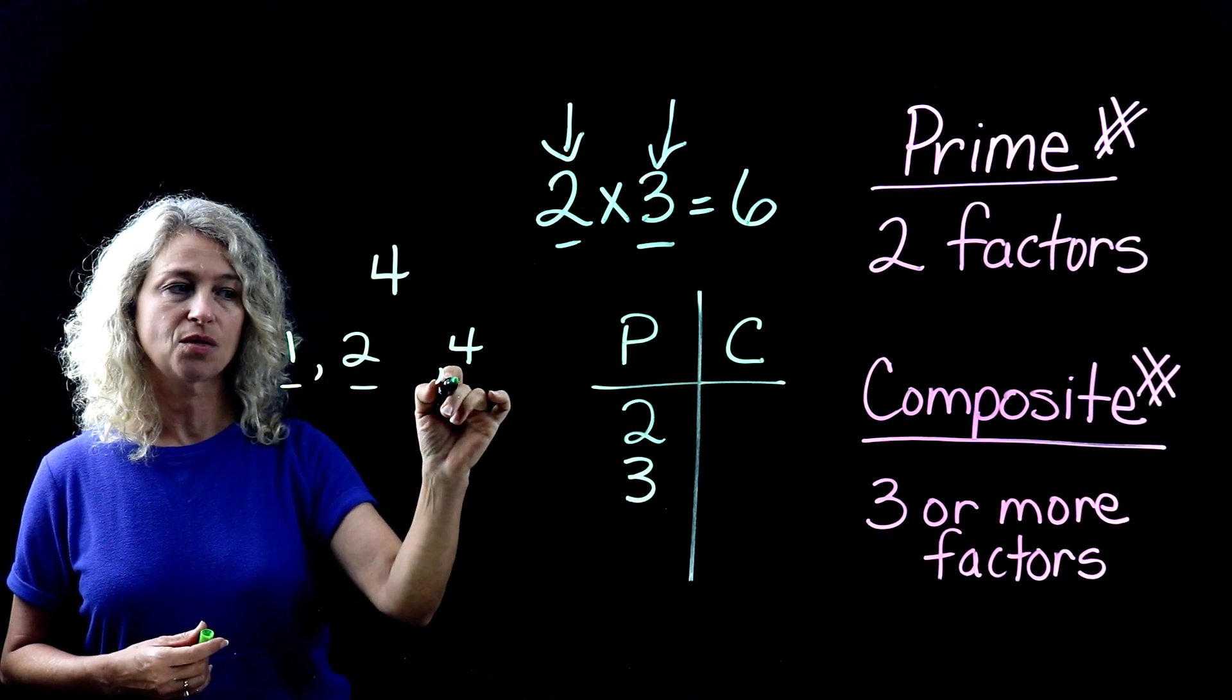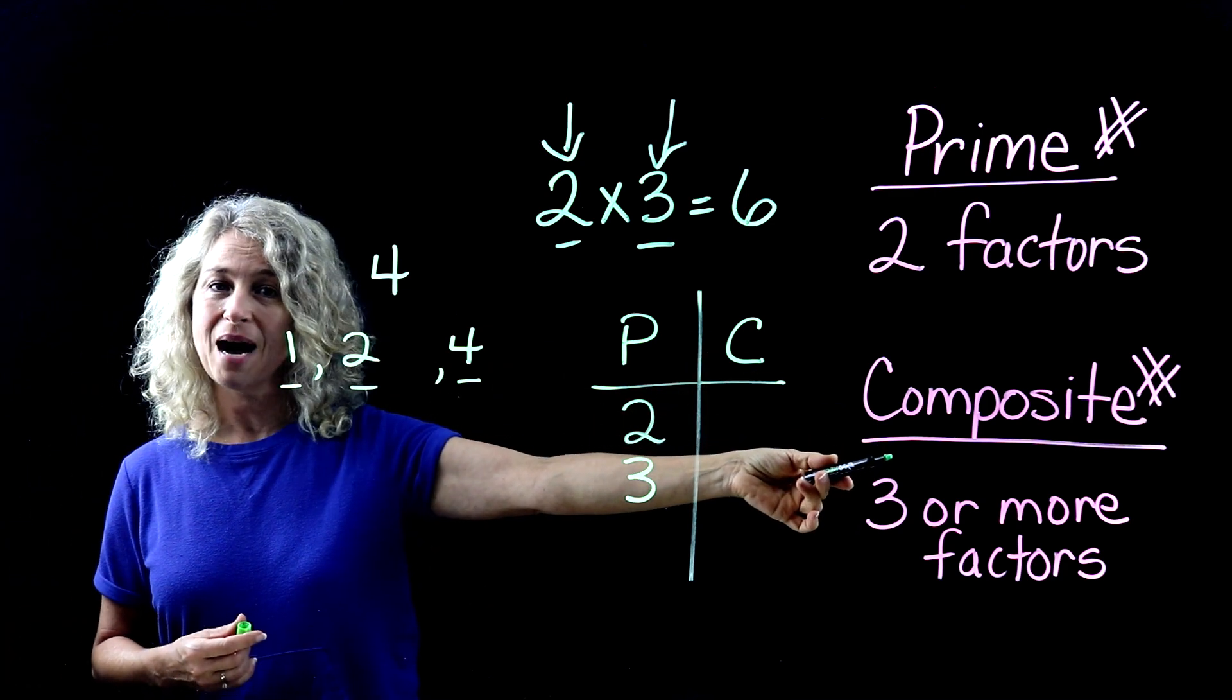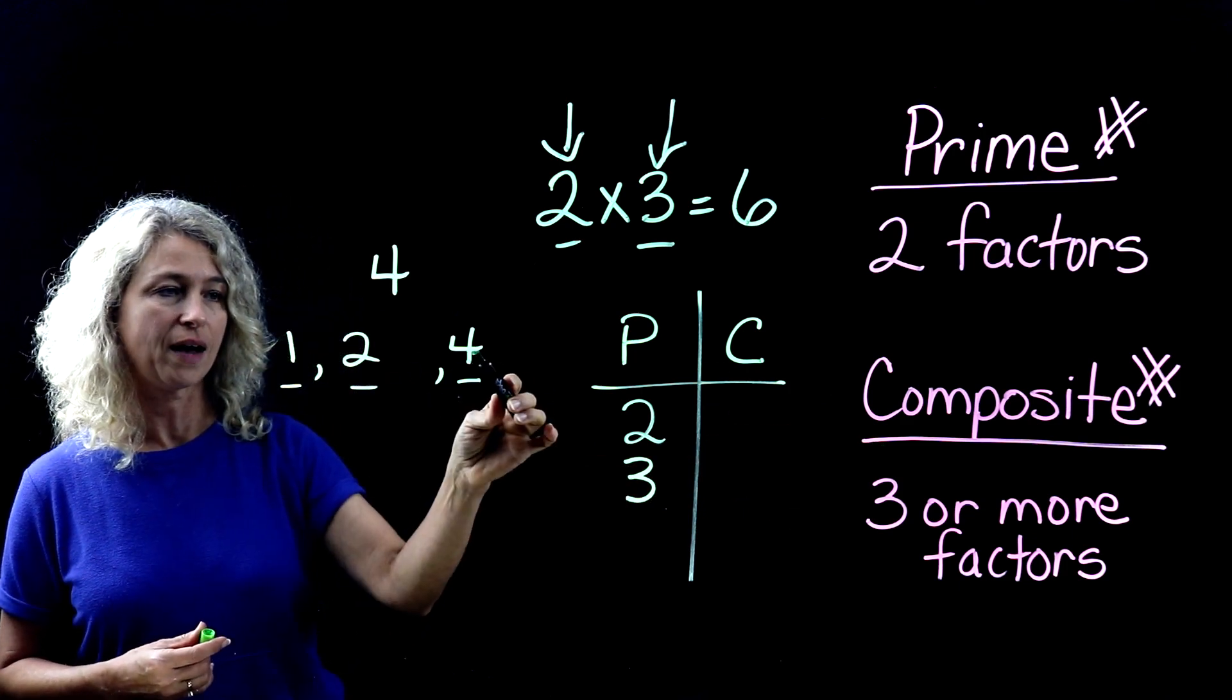And so you wouldn't list two twice because it's the same digit. But look how many factors that four has. One, two, three. So this is a composite number, four, because it has three factors.